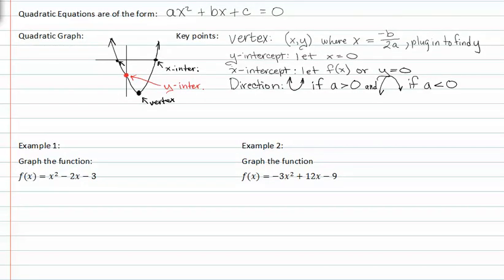Let's look at example one. We have a graph. Since a is greater than zero, our graph is going to be upwards.